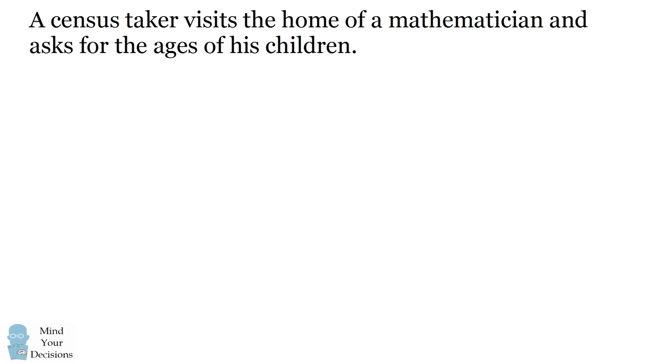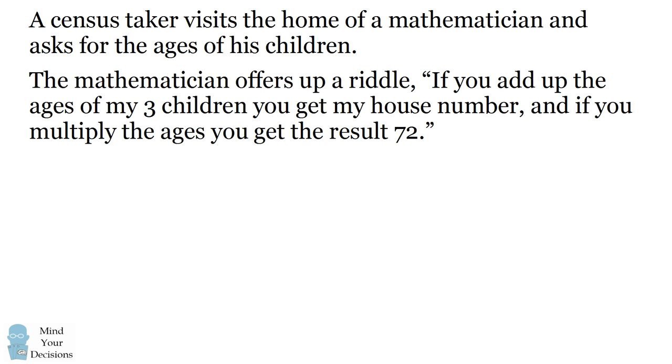Hi, this is Presh Talwalkar. A census taker visits the home of a mathematician and asks for the ages of his children. The mathematician offers up a riddle: If you add up the ages of my three children, you get my house number, and if you multiply the ages, you get the result 72.